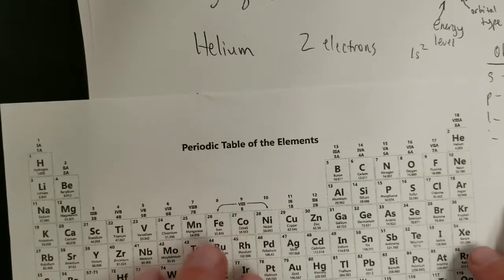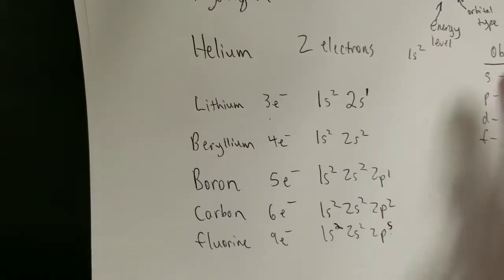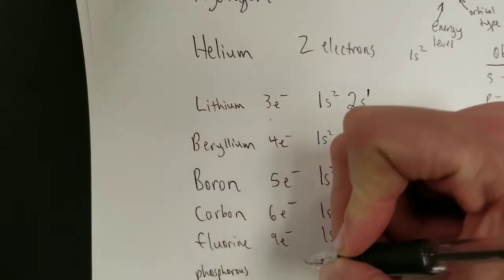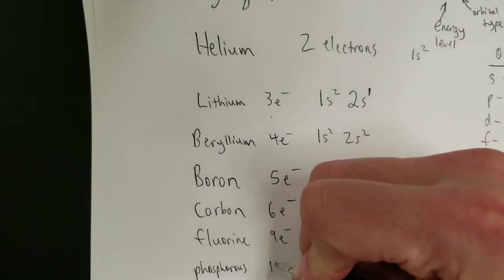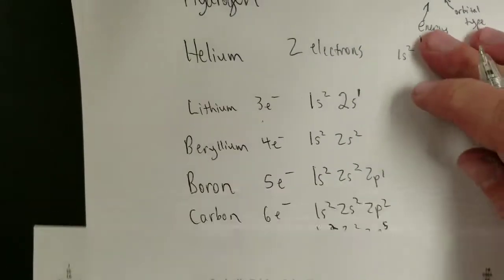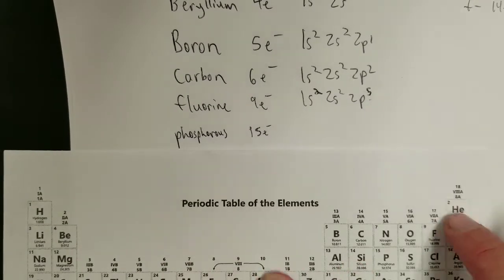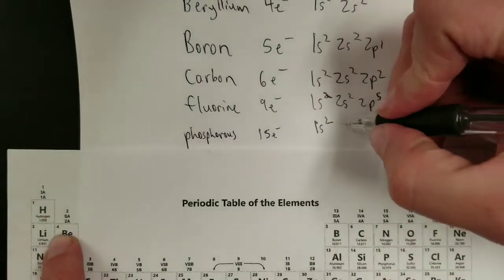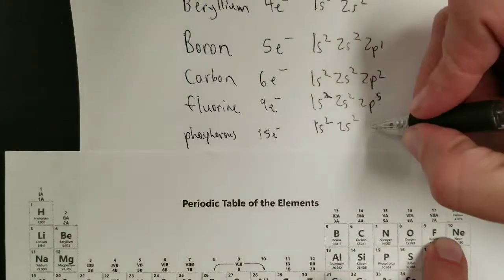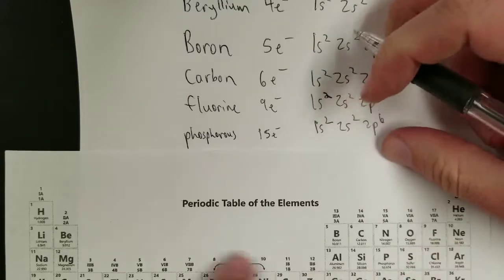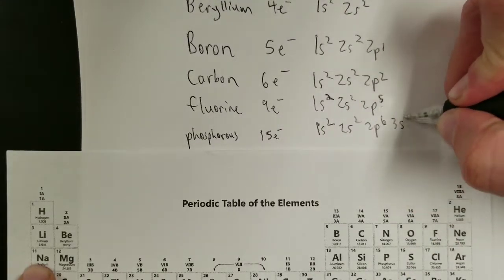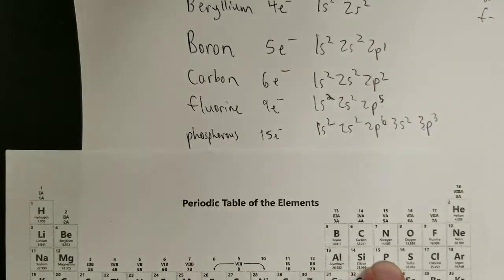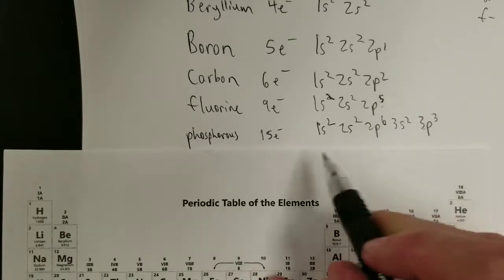We can do this with larger, more complex ones. Let's do phosphorus with its 15 electrons. The road to phosphorus gives: 1s2, 2s2, 2p6, 3s2, 3p3. And that is 15 electrons.